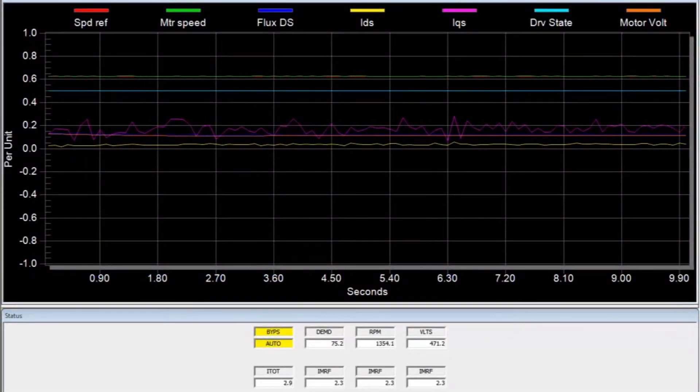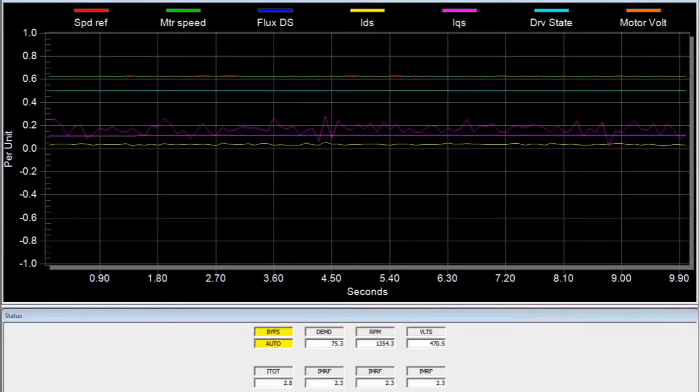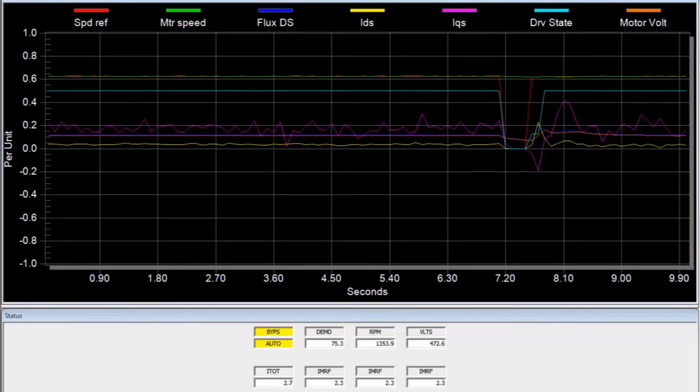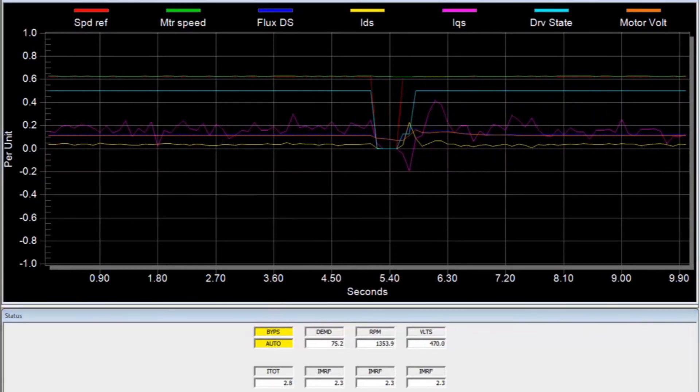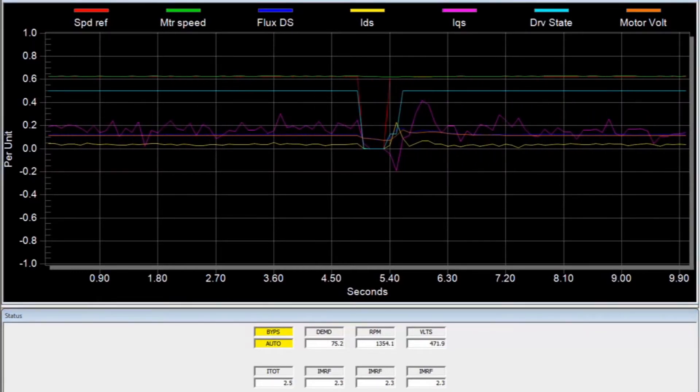Here you can see that the drive is running under normal conditions. Now you can see the cell fault and then be placed into cell bypass. The red speed reference and light blue drive state lines have dropped to zero as the drive reconfigures itself around the failed cell.